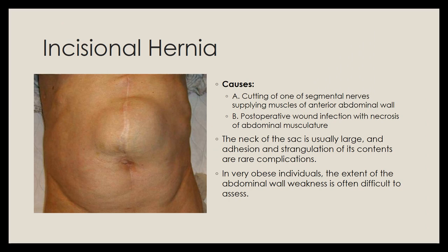Incisional hernias usually occur when an incision in the abdominal region cuts a segmental nerve supplying the anterior abdominal wall muscles, resulting in weakness or paralysis predisposing to a hernia at that incision site. They can also result from post-operative wound infection leading to necrosis of the abdominal muscles, causing weakness in that area. The neck of this sac is usually large and adhesion and strangulation of its contents is relatively rare. In very obese individuals, the extent of abdominal wall weakness is often difficult to assess.